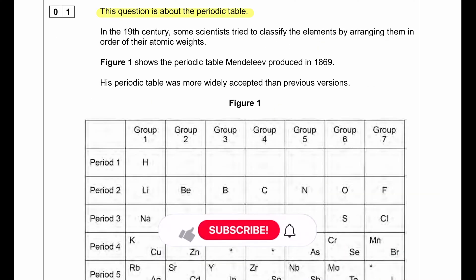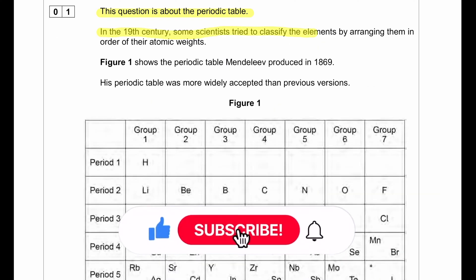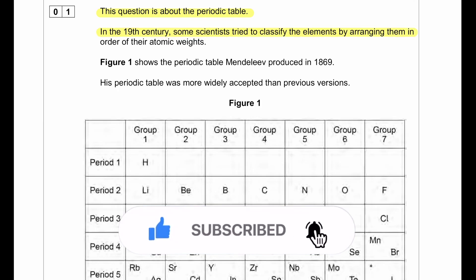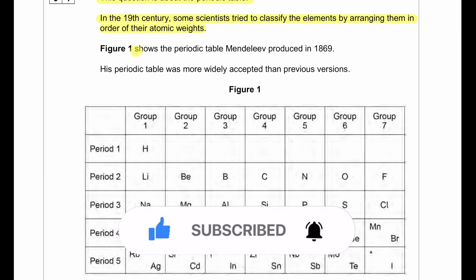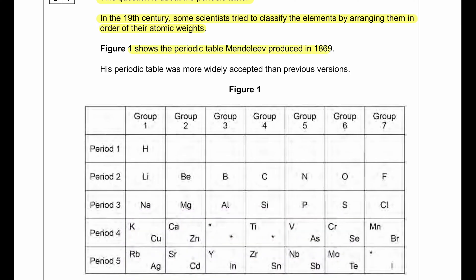This question is about the periodic table. In the 19th century some scientists tried to classify the elements by arranging them in order of their atomic weights. Figure 1 shows the periodic table Mendeleev produced in 1869. His periodic table was more widely accepted than previous versions.